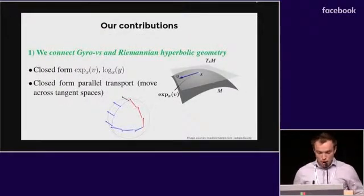Our contributions are the following. We first connect gyrovector space framework and Riemannian hyperbolic geometry. We obtain closed form expression of important quantities like exponential map and parallel transport, which can be used, for example, in optimization.